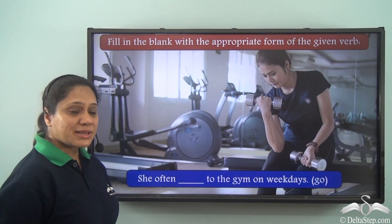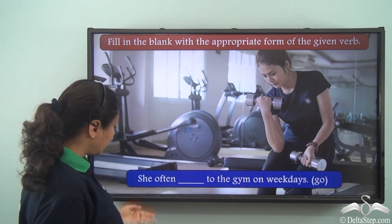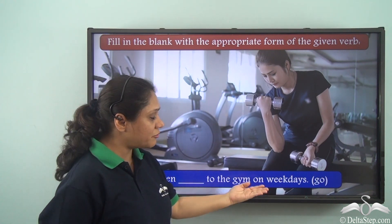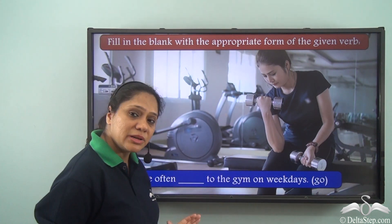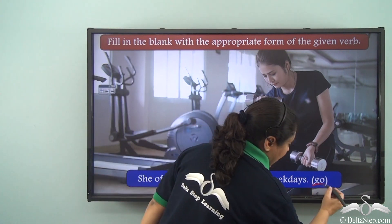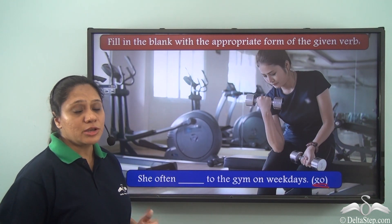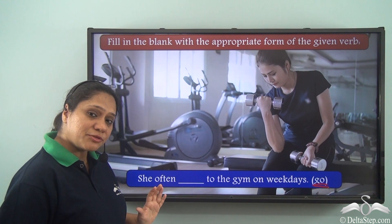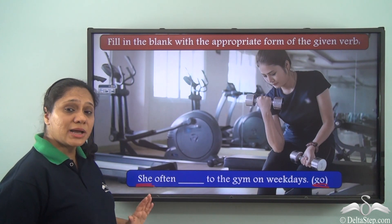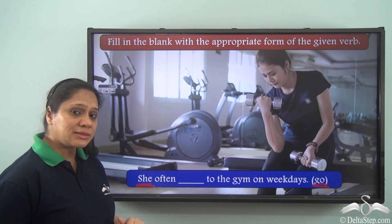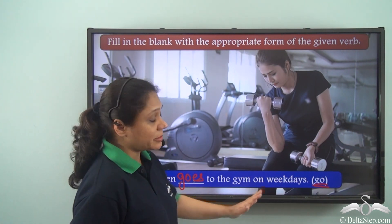Now let us do this exercise. Fill in the blank with the appropriate form of the given verb. The sentence is: She often ___ to the gym on weekdays. The verb given is 'go'. The sentence talks about a regular action, so we use the present tense form. Since we are referring to a singular noun, we use the singular form: she often goes to the gym on weekdays.